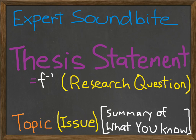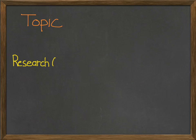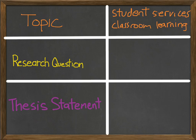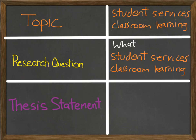You see where we're going with this? You have your topic, research question, and thesis statement. So what does this look like in practice? Let's say someone Googles 'student services classroom learning.' That just happens to be something I know about, so it's likely they're going to come across a list that includes some of my work. But for them to get to my article, they've got to ask the right question. So if they ask, 'What student services can assist classroom training?' then I'm in luck. Because I have written about how, as a student-oriented and faculty-assisted space, the writing center complements the classroom learning environment.